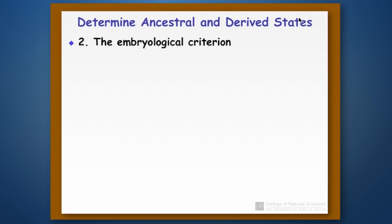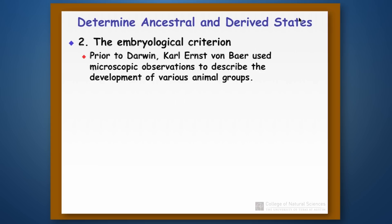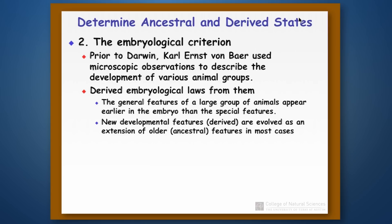The second thing that we can do is look at the embryological development for the different characters. This is referred to as the embryological criterion. The idea behind this came from a guy named Carl Ernst von Baer, who was actually around before Darwin and did not think that evolution occurred. But it turns out that his work became fundamental in using embryological information to figure out the ordering of events. The basic idea is that as an embryo develops, the general features occur first, and these are more ancient in evolutionary time, and newer developmental features occur later in development. That's where the expression 'ontogeny recapitulates phylogeny' comes from.